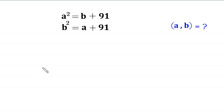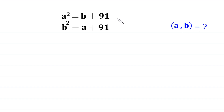Hello everyone, you are welcome. We are going to solve this very nice system of equations: a squared is equal to b plus 91, and b squared is equal to a plus 91. Our job is to find all possible values of a and b. Let us start. Let us call this equation 1 and this equation 2.